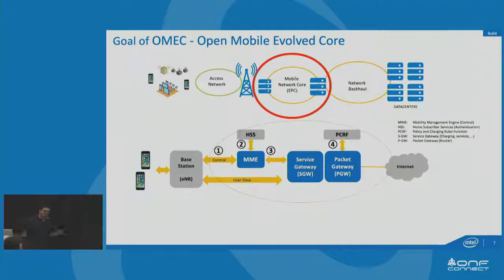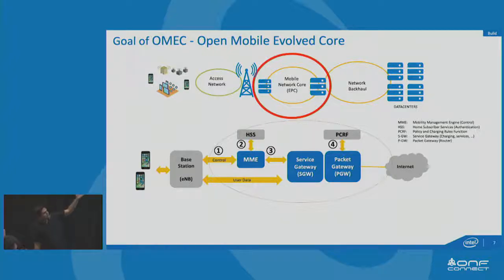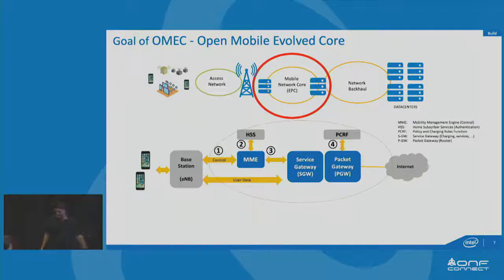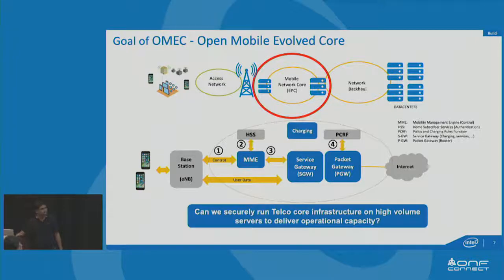You must have heard about the OMEC release. What we tried to do is look at the mobile network code — the EPC — and ask: can we have software implementations of those functions? So we have a packet gateway, a service gateway, and an MME, and we tried to show that you can get a performant EPC running on a regular Intel Xeon processor. The question is: can you run it securely? That's where our focus is now.